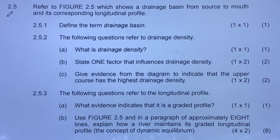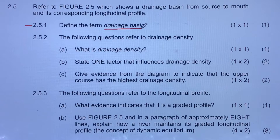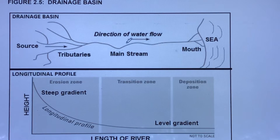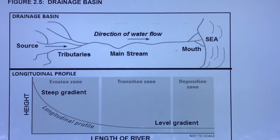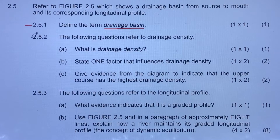Let's answer the questions now. Question 2.5.1: Define the term 'drainage basin.' A drainage basin is an area that is drained by the river and its tributaries. As you can see from the diagram, this area contains tributaries and a river which drains that particular area.